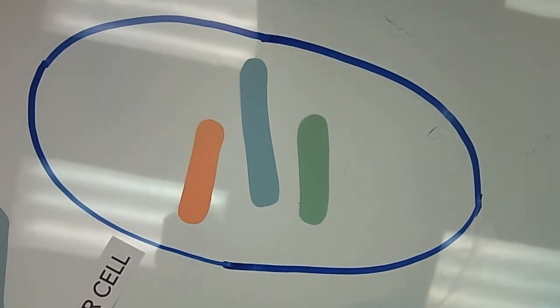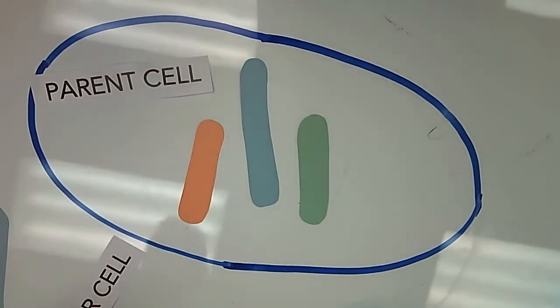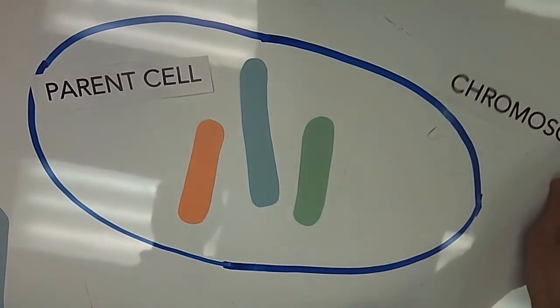So we're going to start off with a parent cell. And in the cell we have, in this case there's three chromosomes. And remember, chromosomes are just tightly packed DNA, that's all they are.